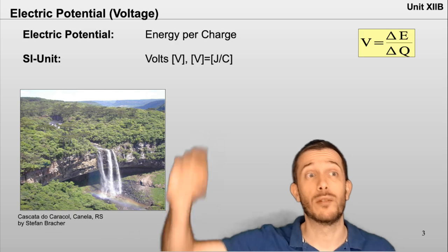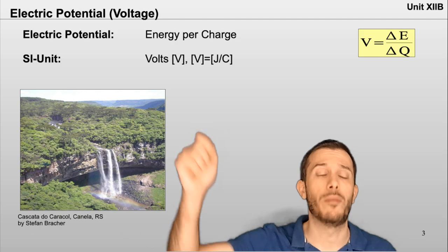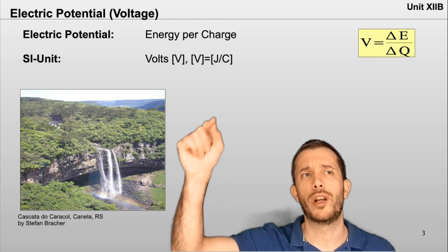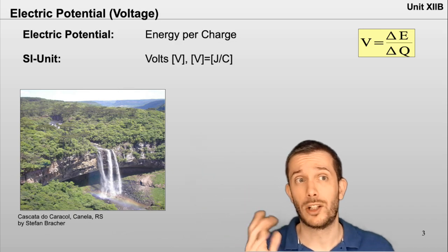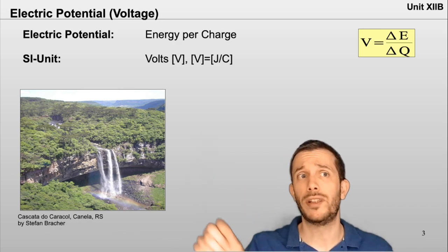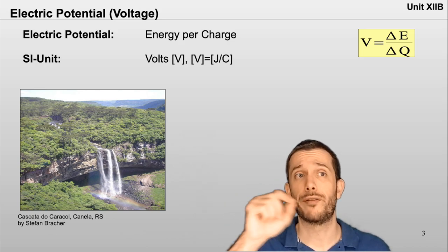So the higher the waterfall, the more potential energy each molecule of water, or each kilogram, if we do the real analogy of water, would have at the top. Now with the electricity, it is not gravity that pulls the electron from one side to the other, but the electrostatic force.